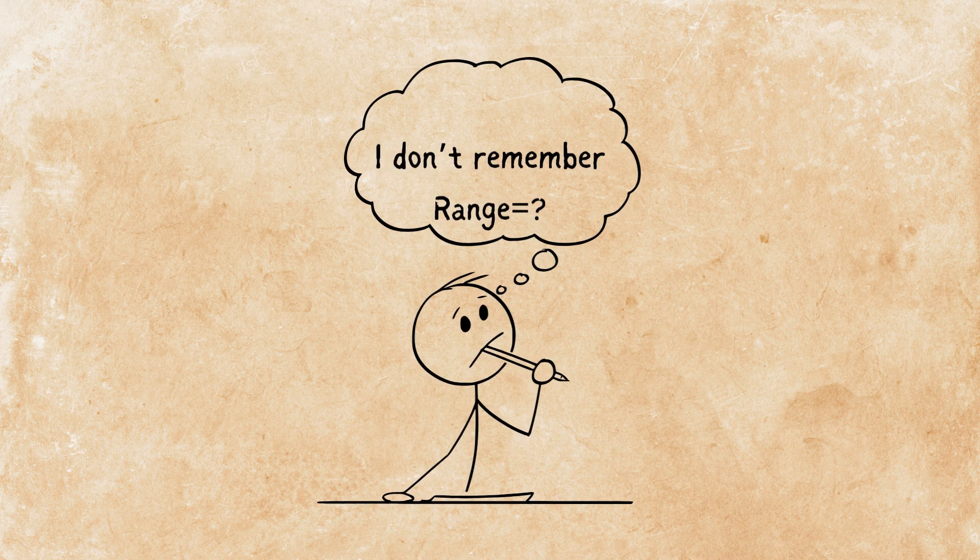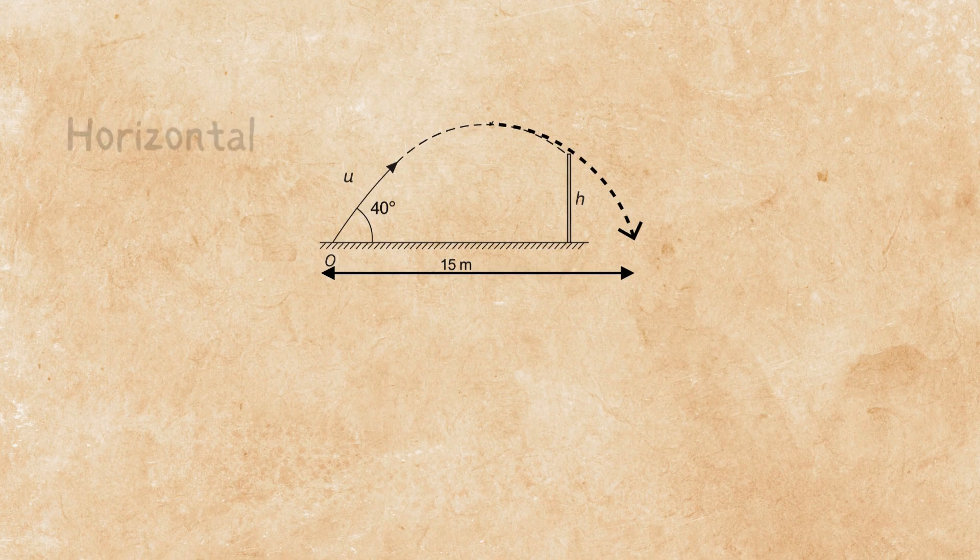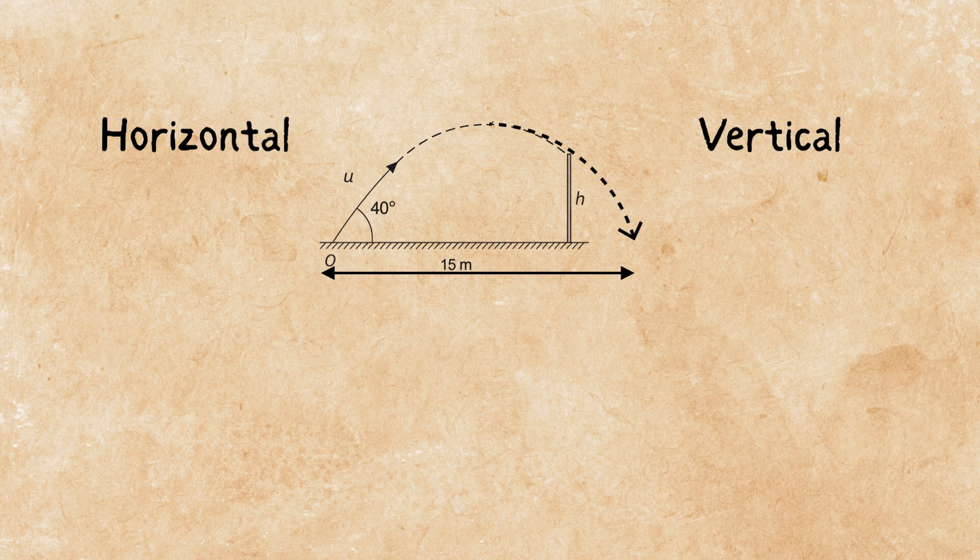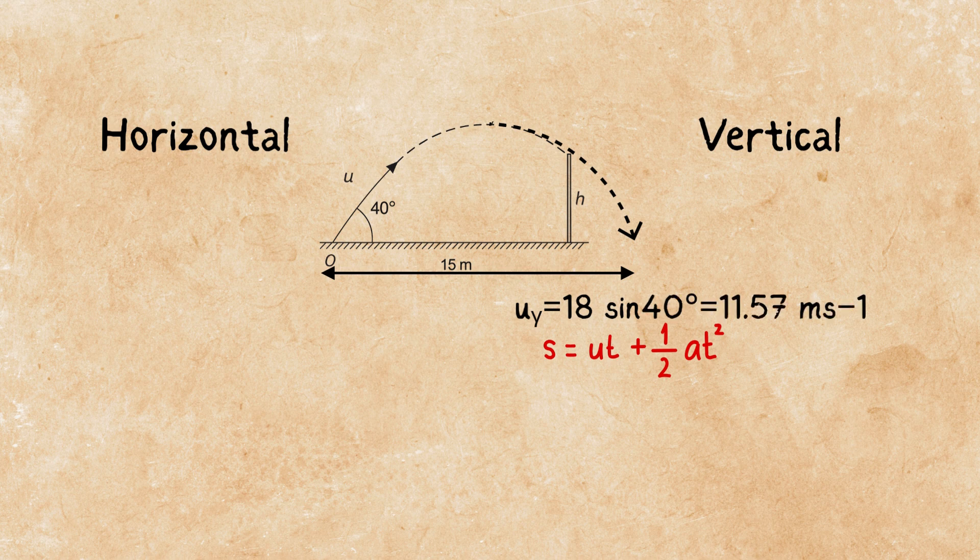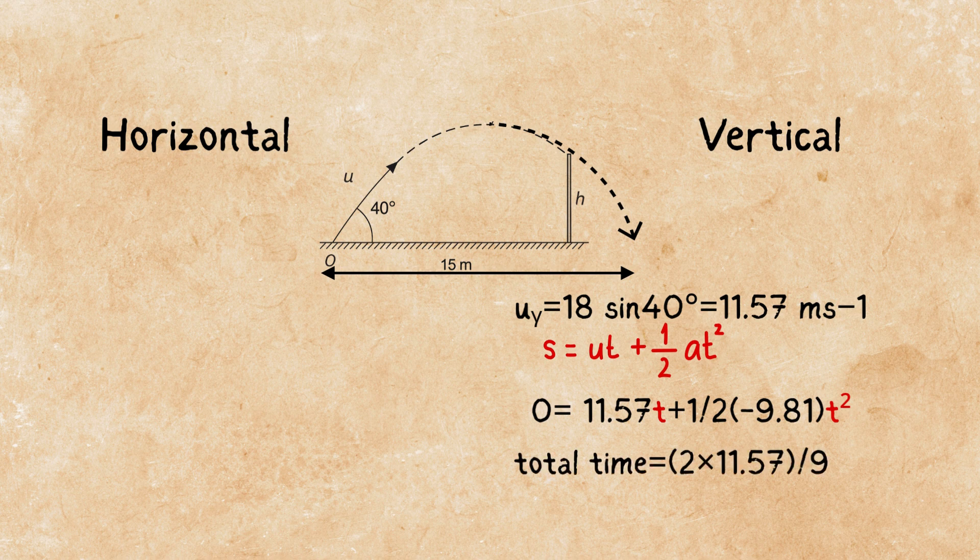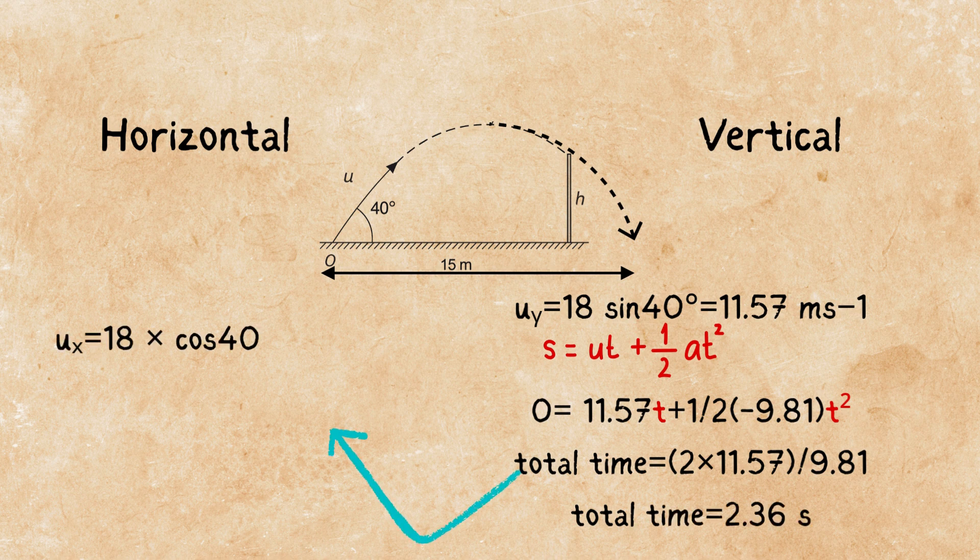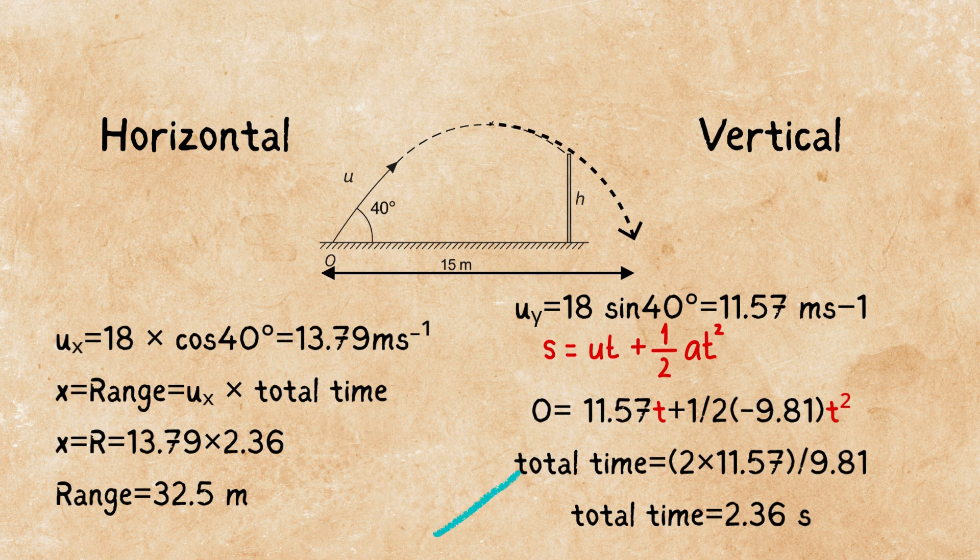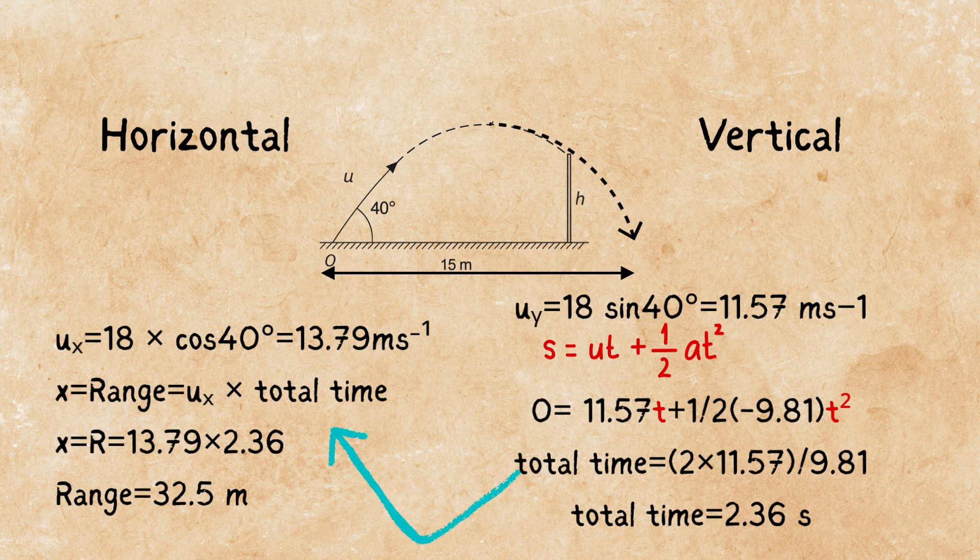But, what if you forgot the formula of range and you don't remember it? There is still a way to solve this question. But it's a little longer. We are going to go back to our vertical and horizontal situation. The point is from point O, starting point, and point P. When you get back to the ground, your vertical displacement is zero. With this information, we can find the total time for the object's starting point to the final point. So, I choose my equation. I put the vertical displacement zero in it. A little mathematics, and I find the total time. In this situation, it's 2.36 seconds.